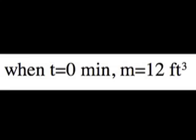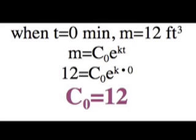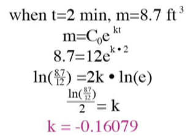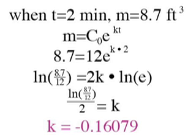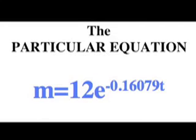Now let's find the particular equation. The initial amount of carbon monoxide is 12 cubic feet, which is extremely lethal. Using the equation from the previous step, we substitute 12 for m and 0 for time. Therefore, 12 equals c₀, the initial condition. Now, to find the constant k, suppose that at t equals 2 minutes, the amount of carbon monoxide is 8.7 cubic feet. Take the natural log of both sides, followed by simple algebra of separating k to be alone, to find that k equals negative 0.16079. Therefore, the particular equation is m equals 12e to the negative 0.16079t.